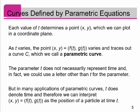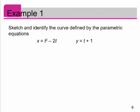The parameter t does not necessarily represent time, and in fact we can use a letter other than t for the parameter. But in this class there are going to be many applications of parametric curves where t does denote time, and therefore we can interpret the point x, y equal to f of t and g of t as the position of a particle at time t.